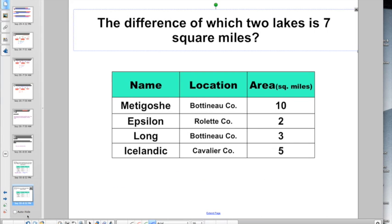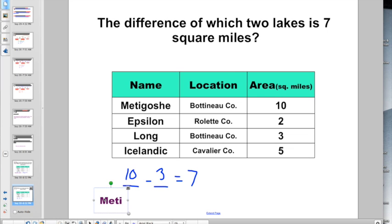Check out this one. The difference of which two lakes is 7 square miles? So something minus something is going to give you 7. What numbers can I use here? What minus what is going to give you 7? Well, looks to me like the only choice I have would be 10 minus 3 is going to give me 7. But that's not the answer. The difference of which two lakes? Well, the one with 10 square miles, hey, that was Metigoshe again. So that's actually what they want for the answer. Which one had the 3 square miles? That one was Long Lake. That's what we're actually looking for in the answer.